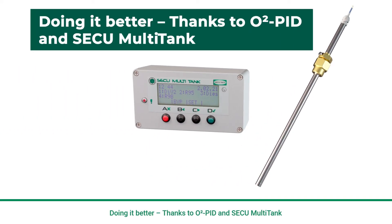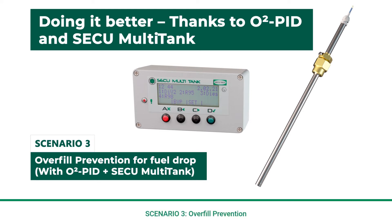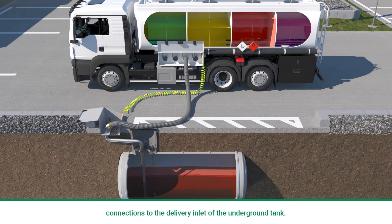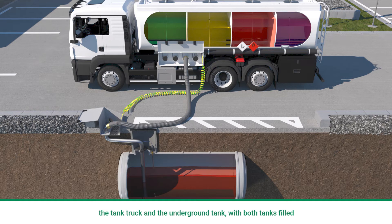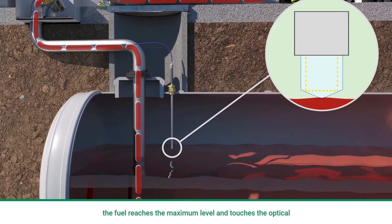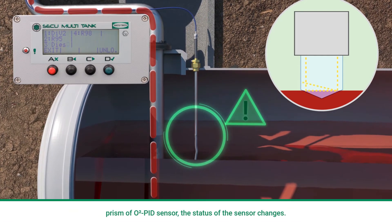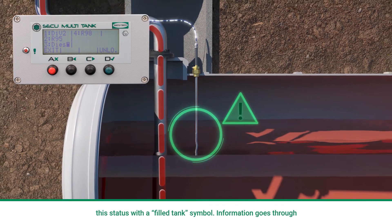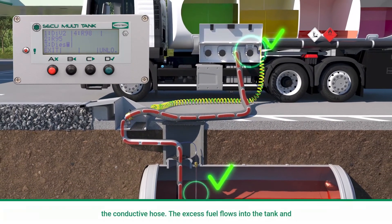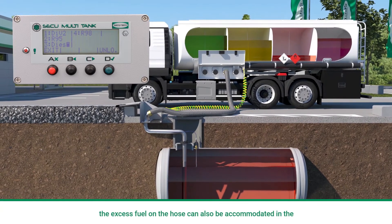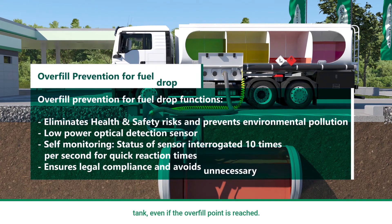Doing it better, thanks to O2 Pit and Seku Multitank. Scenario 3: Overfill prevention for fuel drop with O2 Pit and Seku Multitank. The O2 Pit is now installed on the tank with proper electrical connections to the delivery inlet of the underground tank. The electrically conductive hose is correctly connected between the tank truck and the underground tank, with both tanks filled with diesel. When fuel is pumped into the underground tank and reaches the maximum level, it touches the optical prism of the O2 Pit sensor and the sensor status changes. The O2 Pit signals the maximum allowed level in the station tank. The Seku Multitank closes the bottom valve immediately and shows this status with a filled tank symbol. Information goes through the conductive hose and overfill is prevented. With properly installed O2 Pit and Seku Multitank, the excess fuel on the hose can also be accommodated in the tank, even if the overfill point is reached.